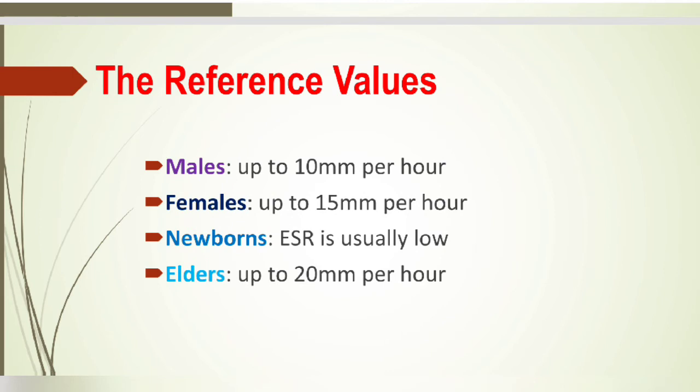Reference values: males up to 10 mm per hour, females up to 15 mm per hour, newborns usually have low ESR values, and elders up to 20 mm per hour.